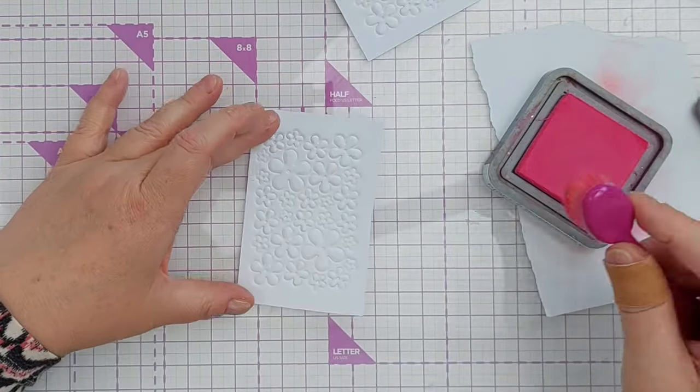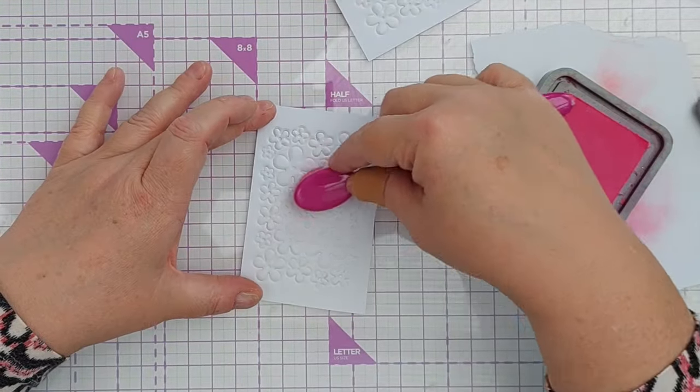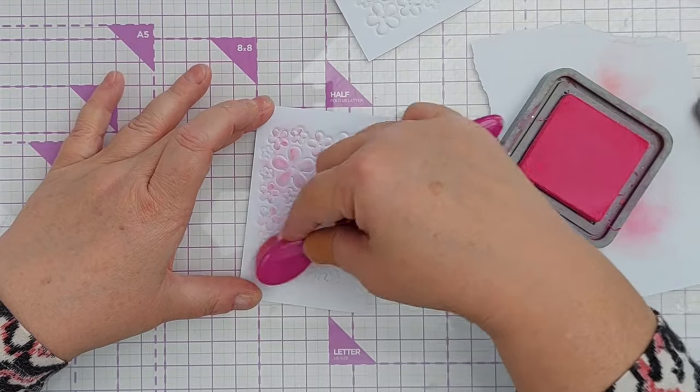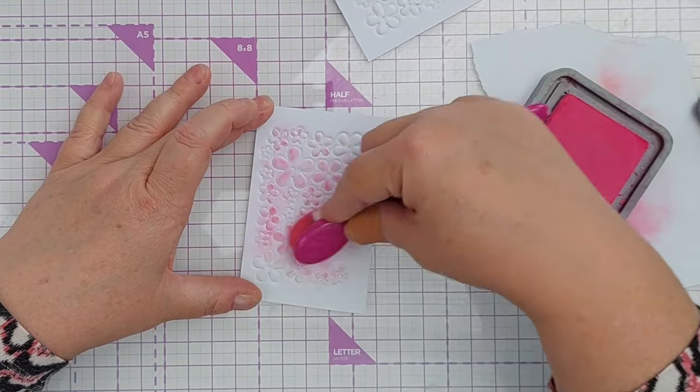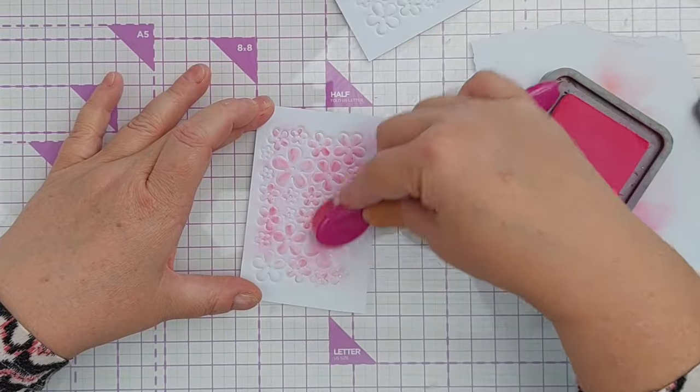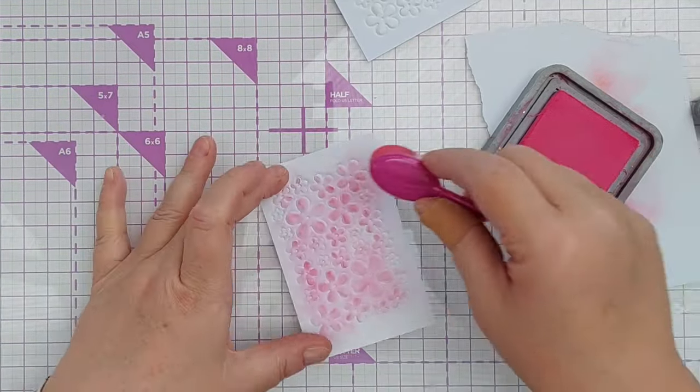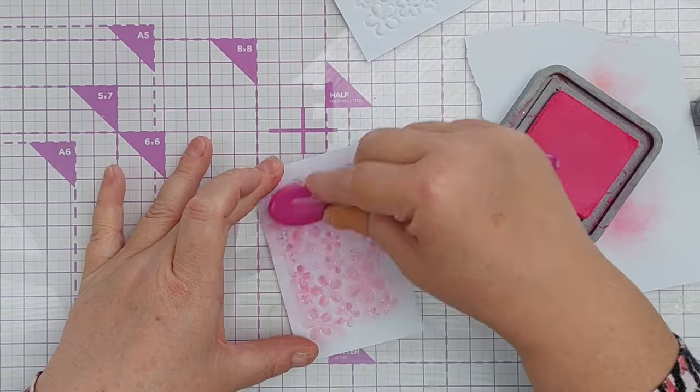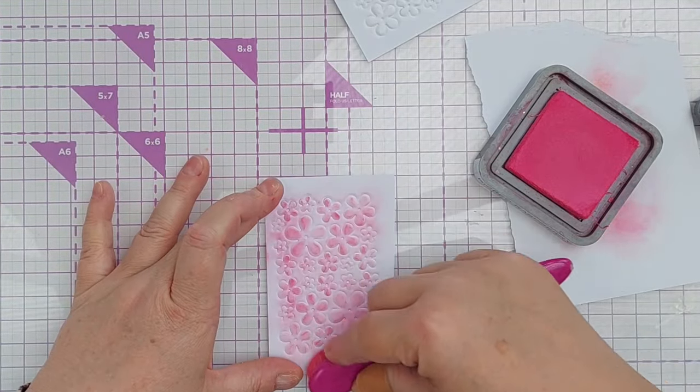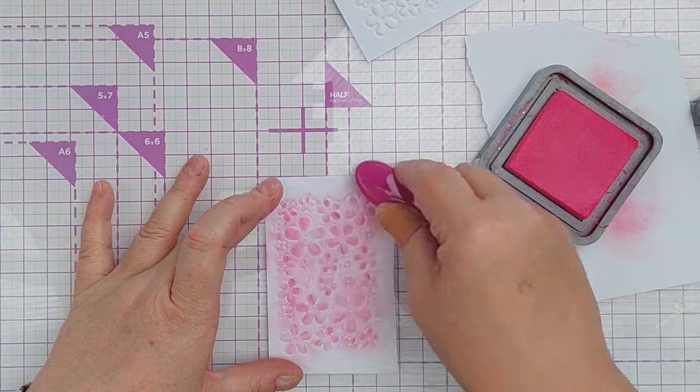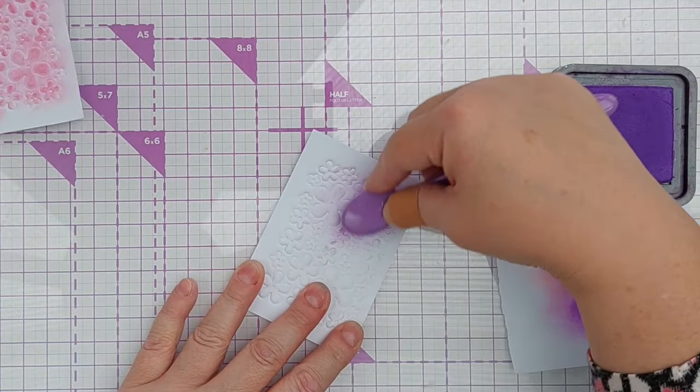And I chose to do it this way, embossing and then inking, because the embossing catches the color in a way that's different from if I just brushed it on and then I cut my flowers out. I think you get a much more variegated and interesting inking this way.